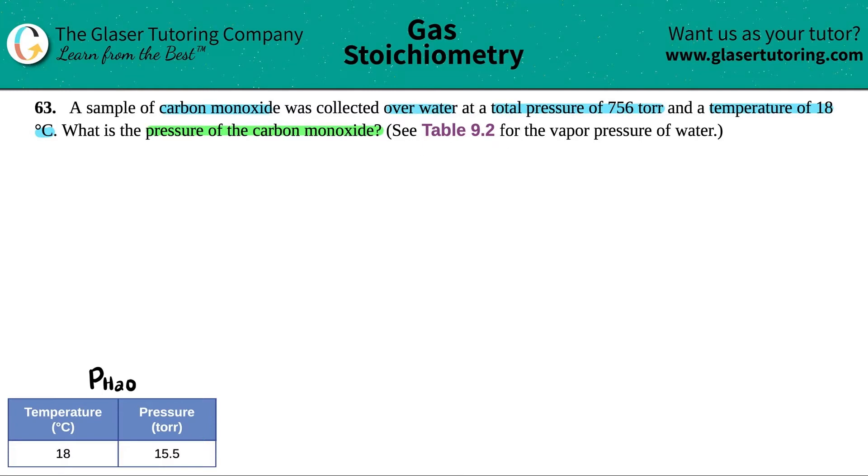I went to Table 9.2 and found that the pressure of water (H2O) at 18 degrees Celsius is 15.5 torr. I picked 18 degrees Celsius because that's the temperature given in this problem. If you had a different temperature, you'd need to find a different number.